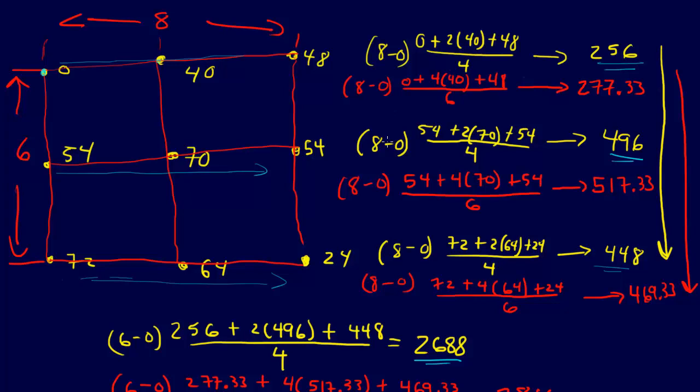The other thing that we could do is we could use Simpson's one-third rule, because we have three points here. The equation for Simpson's one-third rule was B minus A times X naught plus 4 times X1 plus X2 divided by 6. For this line here then, we get 8 minus 0, because that's our distance here, times 0 plus 4 times 40 plus 48 divided by 6.